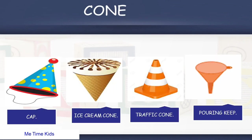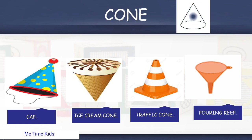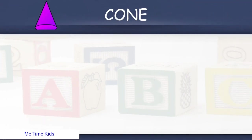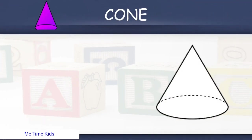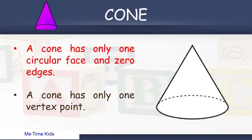Fourth is cone. Some examples of cone are Cap, ice cream cone, pouring cap, and traffic cone. Let's see its properties. A cone has only 1 circular face and 0 edges. A cone has only 1 vertex point.